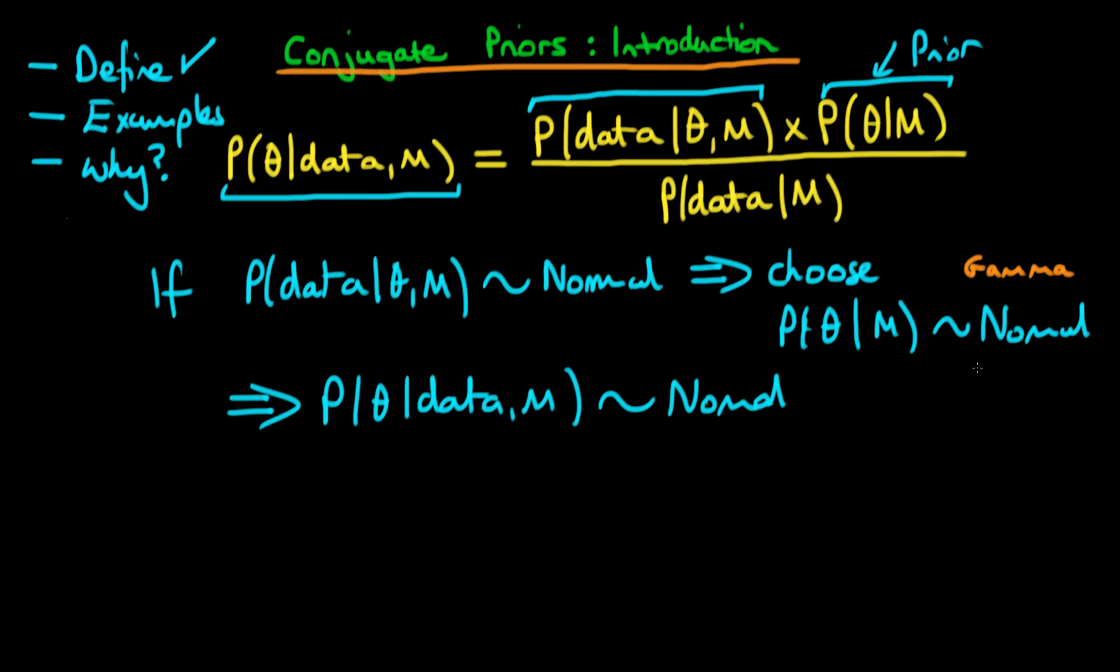So the idea is that if we choose our prior distribution in a particularly intelligent way, such that it is what we call conjugate to the likelihood in all cases, then it turns out that in that case of choosing a conjugate prior, the posterior has exactly the same form as the prior.